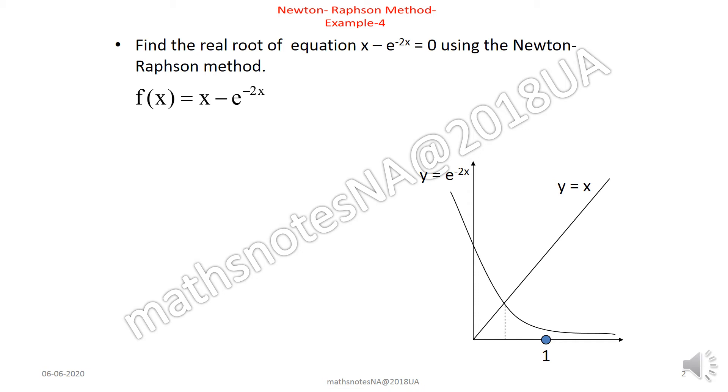So we say f(x) = x - e^(-2x). We find out its derivative f'(x) = 1 + 2e^(-2x). Now we put these two values in the formula. This is the general formula of Newton-Raphson method, that is x_{n+1} = x_n - f(x_n)/f'(x_n) and n takes values 0, 1, 2 and so on.